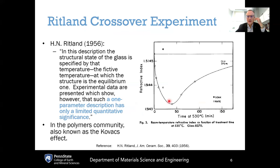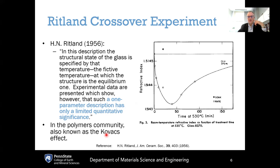This idea that fictive temperature points back to a particular structural state was critically examined by H.N. Ritland at Corning in the famous Ritland Crossover Experiment, published in 1956. About seven years later, in the polymers community, a scientist named Kovac did exactly the same experiment for polymer systems and got the same result — apparently unaware of Ritland's work. Within the polymers community it is known as the Kovac effect, but the original experiment was done by Ritland.